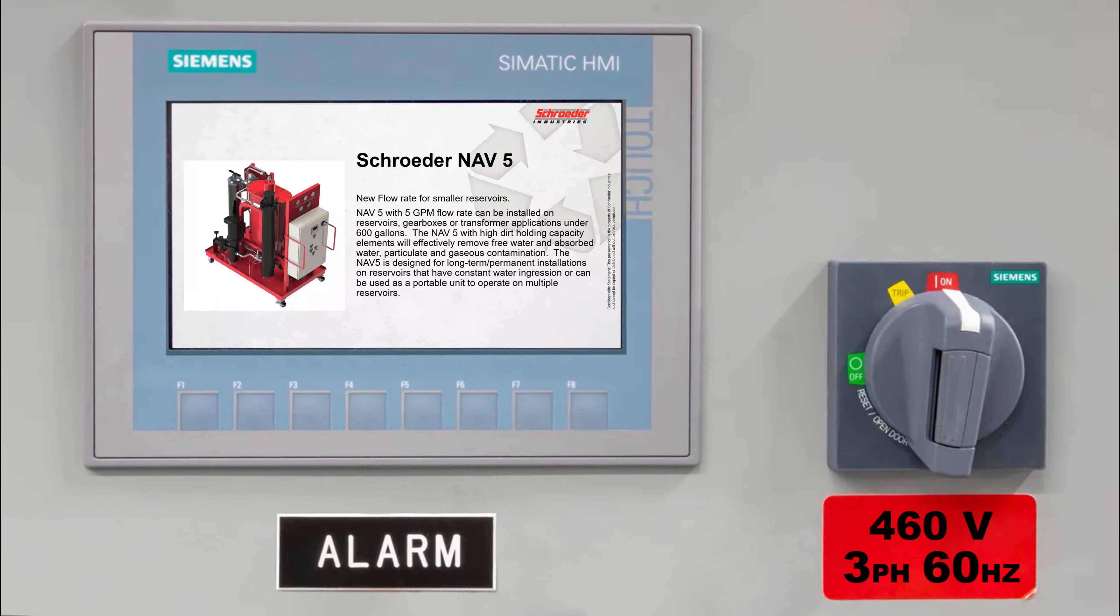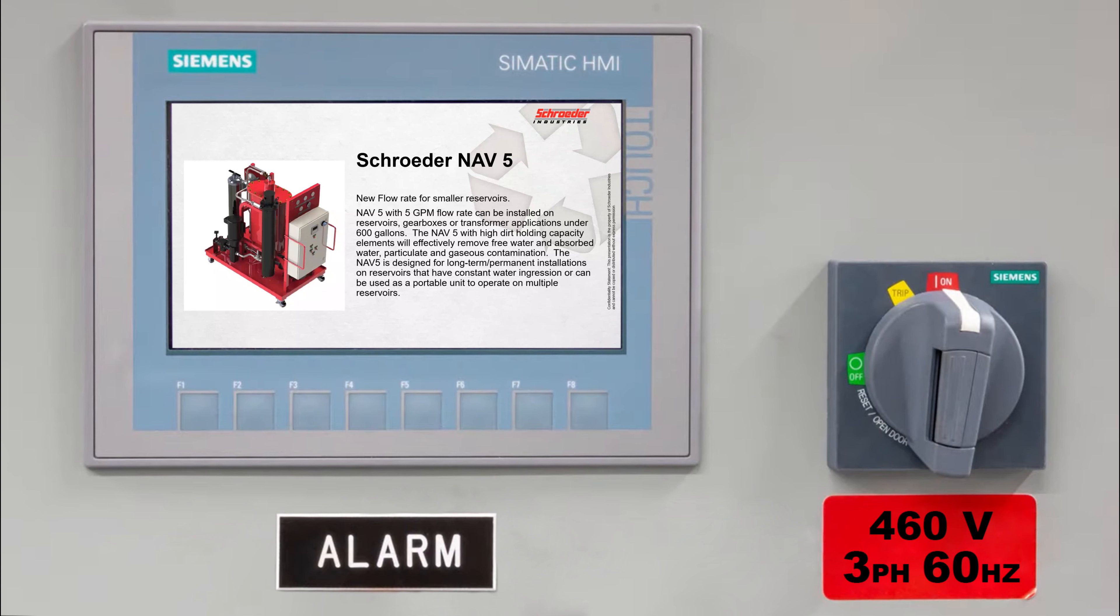It's one of our power hitters on heavy water removing ability. I'm going to spend some time discussing what is the vacuum dehydrator versus our mass transfer Triton units. Basically, the NAV uses a vacuum pump to create a vacuum in the chamber, which will in turn expand the air and dry it.